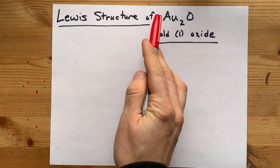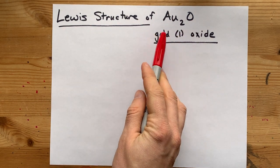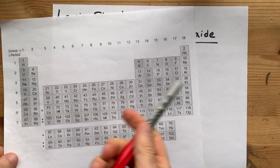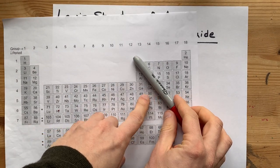The Lewis structure of Au2O, or gold(I) oxide, has gold, a metal,